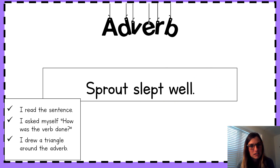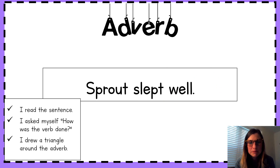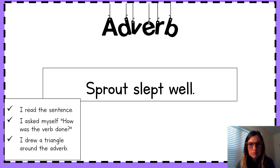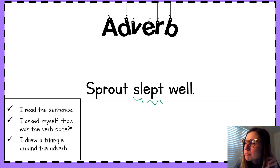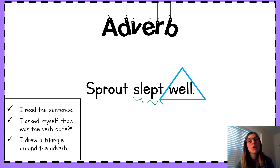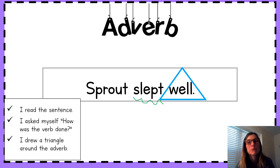Let's do another sentence. Sprout slept well. How did Sprout sleep? You know slept is our verb. How'd she sleep? Yes. Our adverb is well. How was the verb done? She slept well.